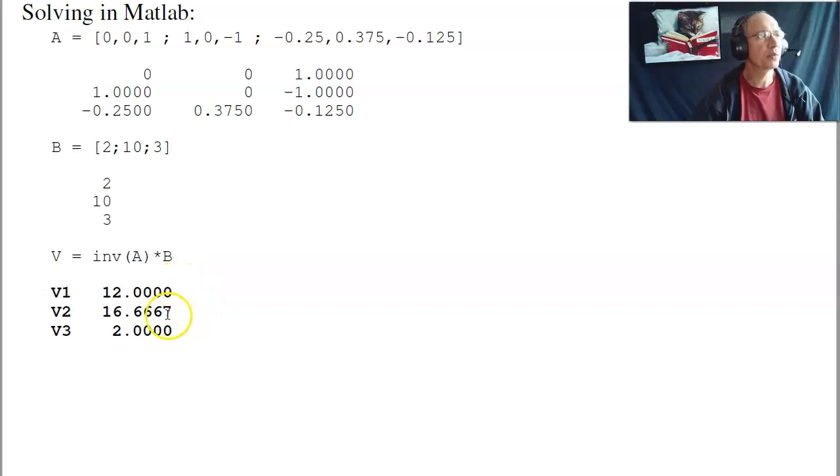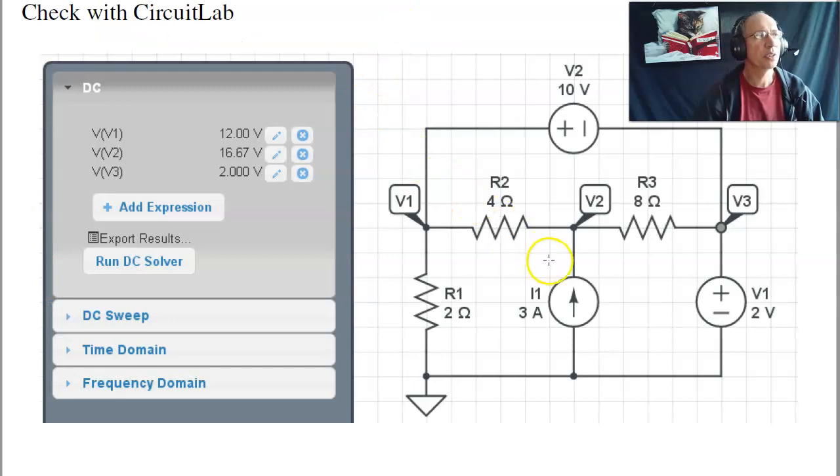So you should get 12 volts, 16.66 volts, and 2 volts. If I go into CircuitLab and build it, that's exactly what I get. 12 volts, 16.66 volts, and 2 volts.